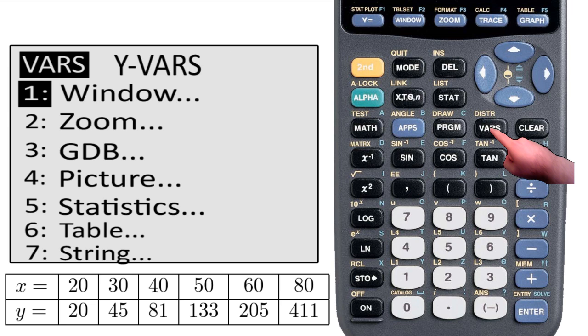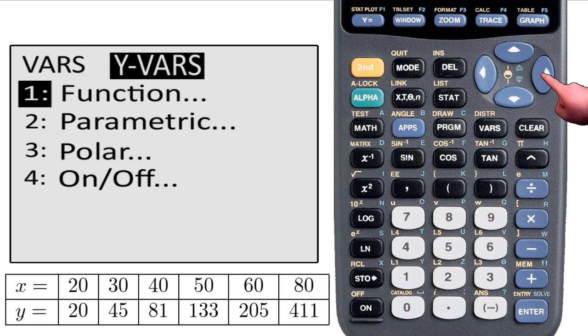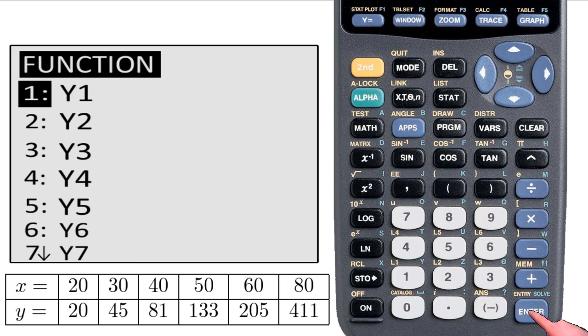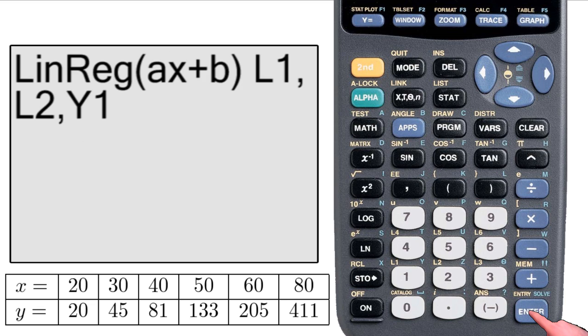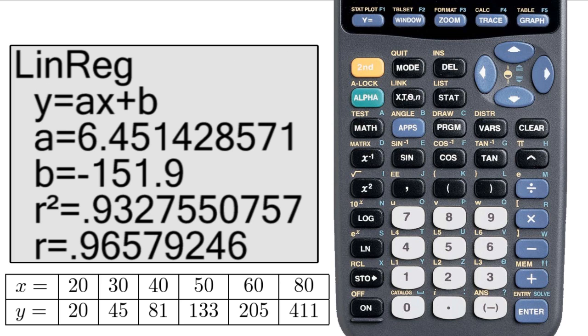So I hit the VARS key, go to the second page, select Function, select Y1, but you can do any Y function that you want, and it puts Y1 on the home screen. I hit Enter, and it brings me to this page.